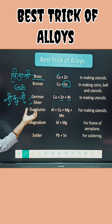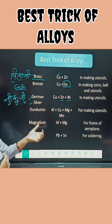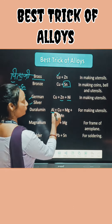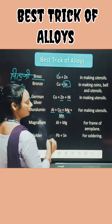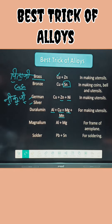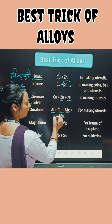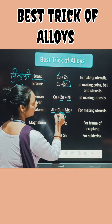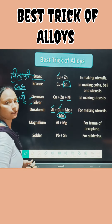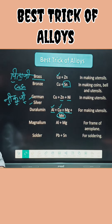Next we have Duralumin. It has more durability, so it uses four components: aluminium, copper, magnesium, and manganese. You can learn these by using the trick 'man ko mange alu ko' to remember all four elements of Duralumin.